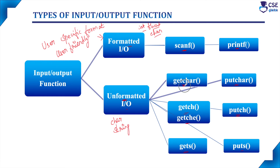The getchar function reads a character from the keyboard and stores it in a memory location. You need to press the Enter key after typing the character. The putchar function displays the stored character data from memory onto the output screen.